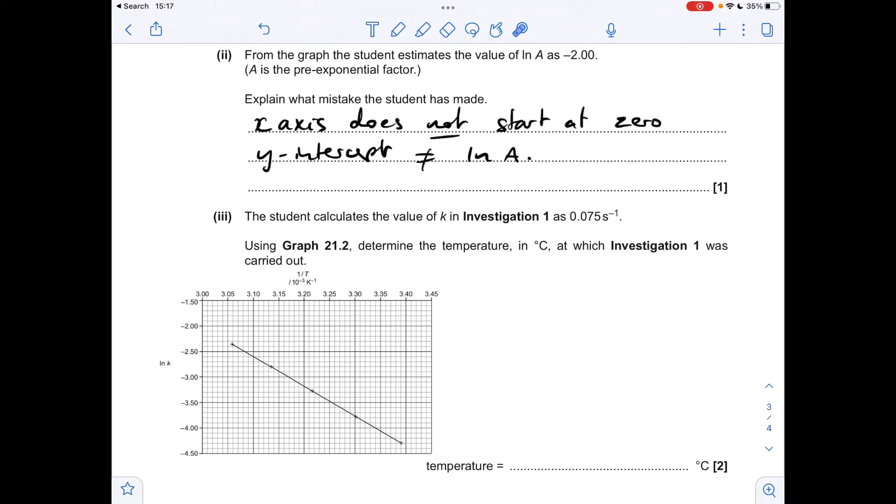And for the final part, the student's calculated the value for k at 0.075. So obviously we need to turn that into the ln of k, so we can use the graph. So that ln of 0.075 is minus 2.59. So we need to find that on the graph. Well, there's minus 2.5, there's minus 2.6. So you can see it's there.